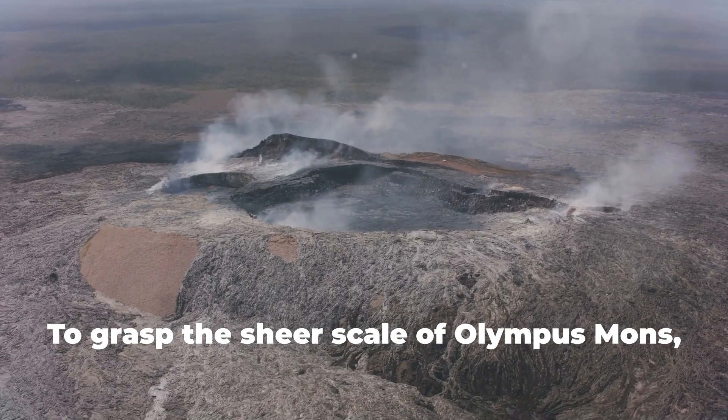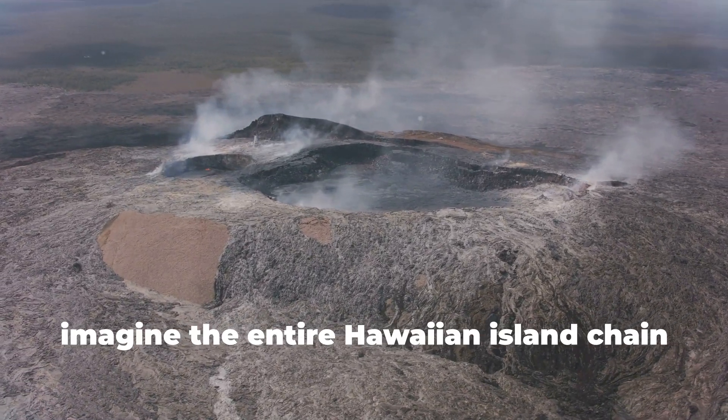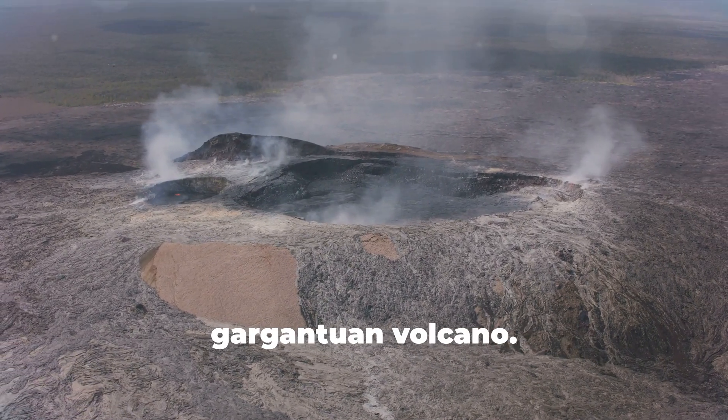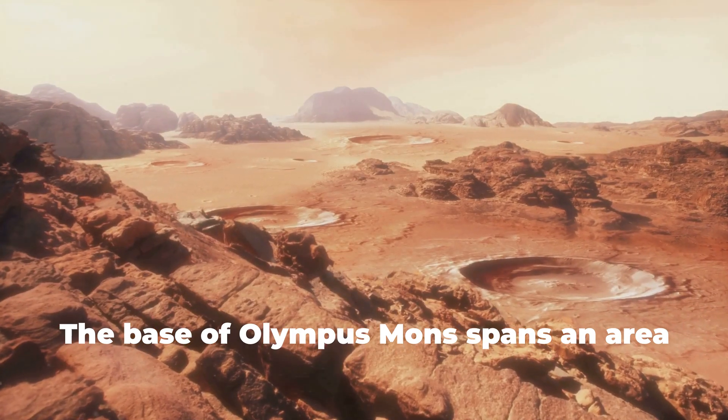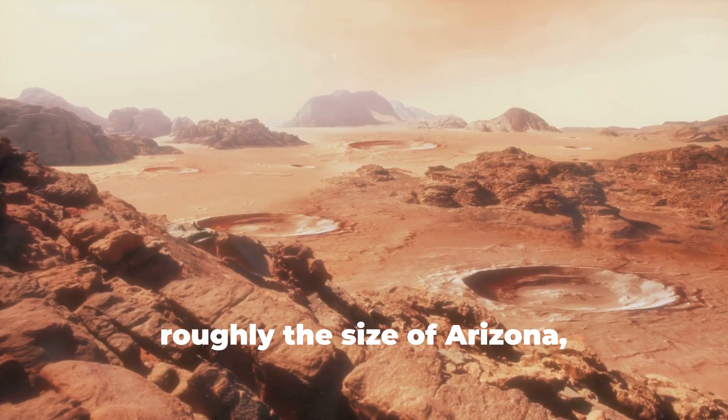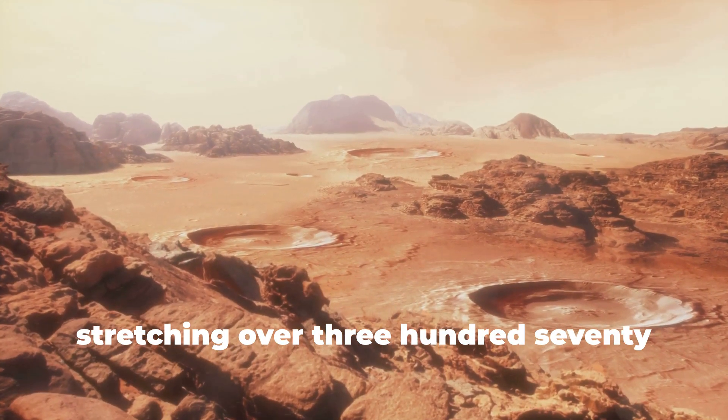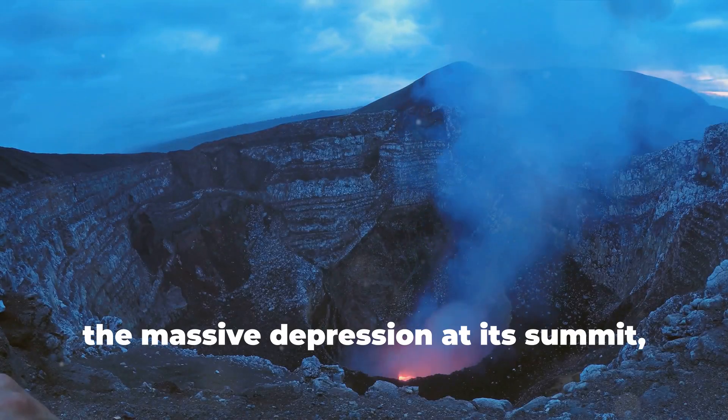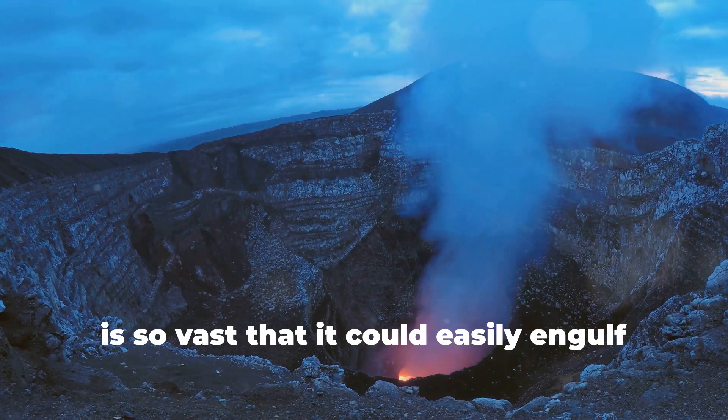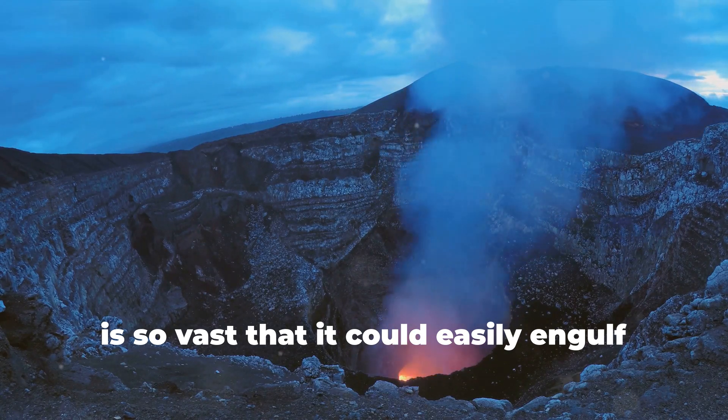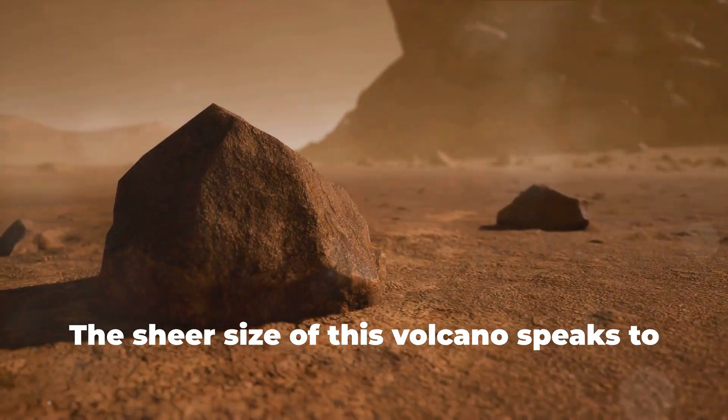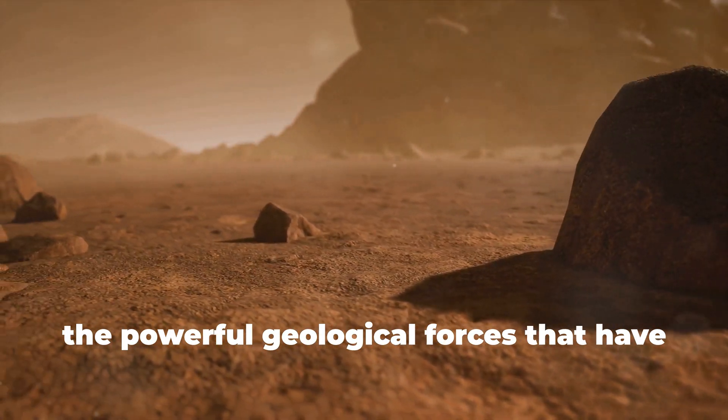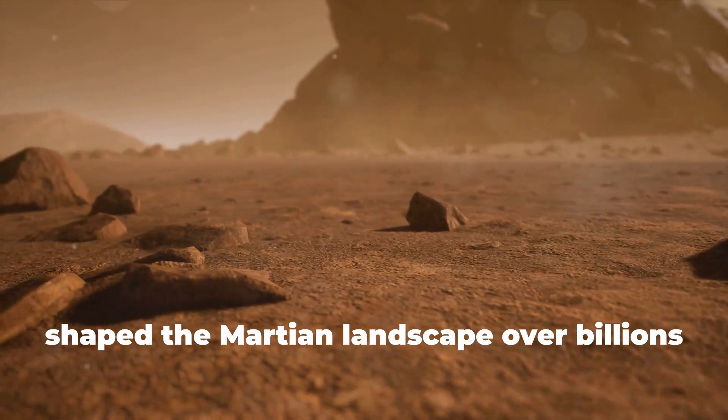To grasp the sheer scale of Olympus Mons, imagine the entire Hawaiian island chain compressed into a single gargantuan volcano. The base of Olympus Mons spans an area roughly the size of Arizona, stretching over 370 miles across the Martian surface. Its caldera, the massive depression at its summit, is so vast that it could easily engulf the entire Los Angeles metropolitan area. The sheer size of this volcano speaks to the powerful geological forces that have shaped the Martian landscape over billions of years.